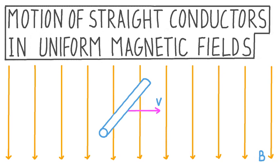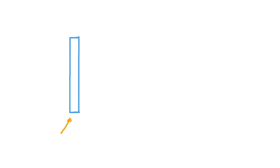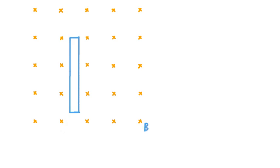Let's consider the parts involved in making this happen. First, we have a piece of conducting material — this could be a segment of wire or a metal bar, any straight piece of material that easily conducts electricity. Say then that we surround this conductor with a uniform magnetic field. We can call this field B, and by each one of these small x's, we can tell that this magnetic field is directed into the screen. And say that we then start to move our conductor at a constant speed through this field.